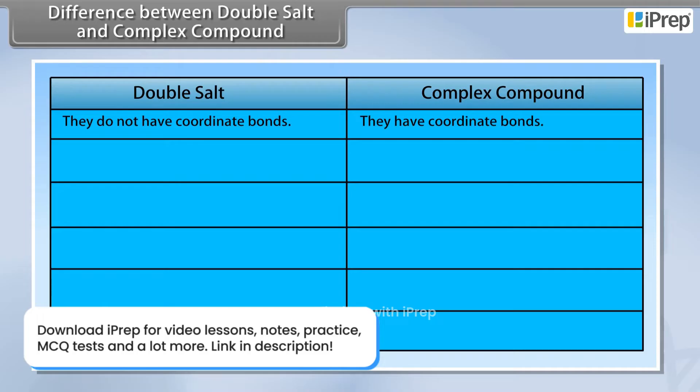Double salts do not have coordinate bonds, whereas complex compounds have coordinate bonds. Double salts exist in solid state.